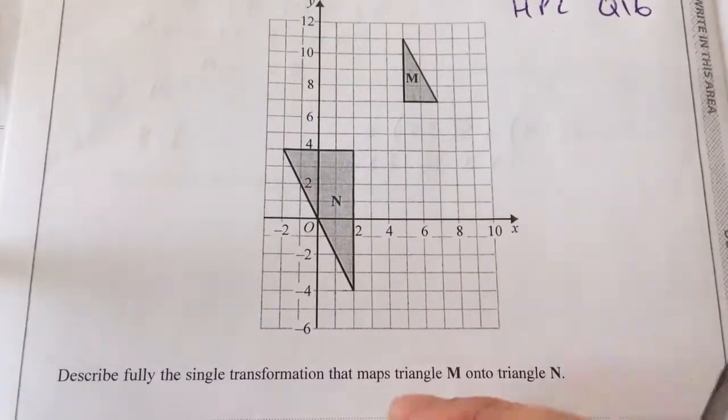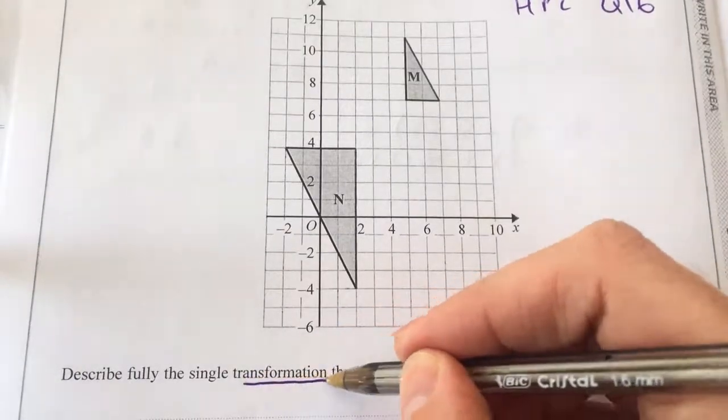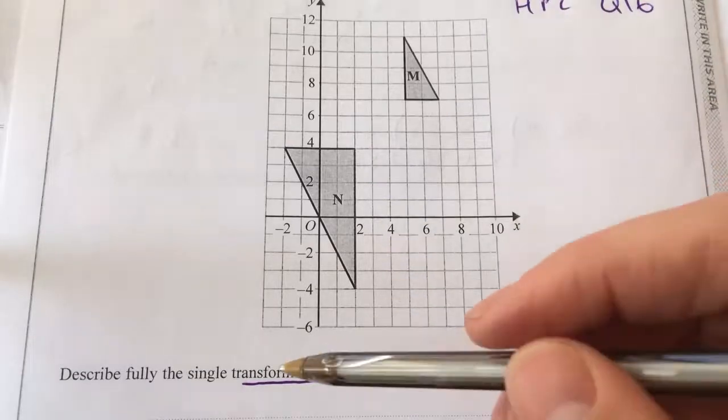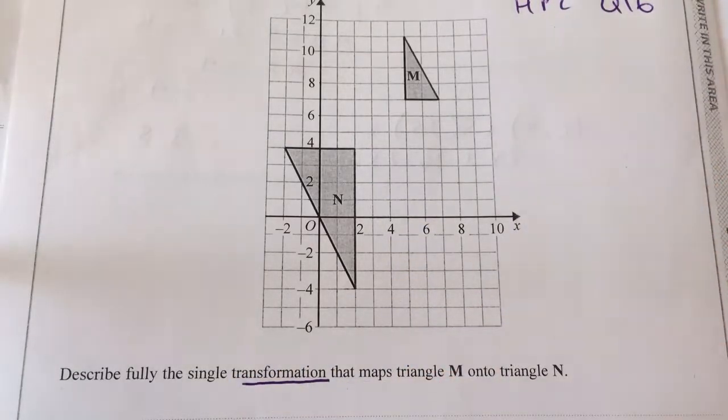We've been asked to describe fully the single transformation that maps M onto N. Always remember that it's a single transformation. If you mix them, they'll always give you zero marks.